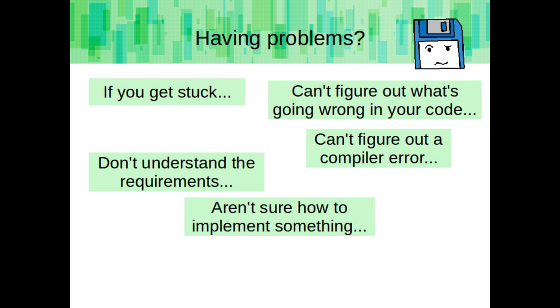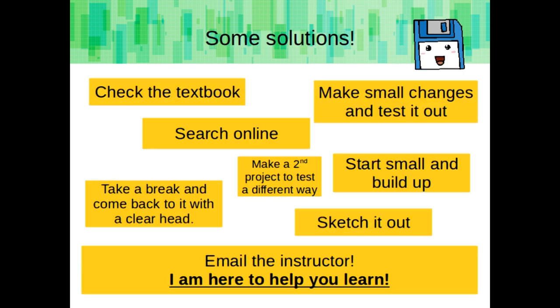So what should you do if you get stuck, can't figure out what's going wrong in your code, can't figure out a compiler error, don't understand the requirements, or aren't sure how to implement something? Try checking your textbook, as it's a good reference material. Try making small changes and test it out a little bit at a time. Do a search online, especially for compiler errors. Make a second project to test a different way. Start small and build up. Take a break and come back to it with a clear head. Sketch it out. Or just email me — I am here to help you learn.